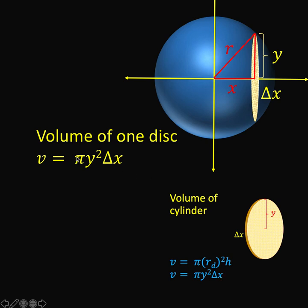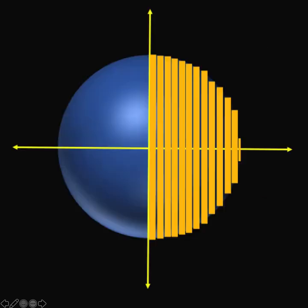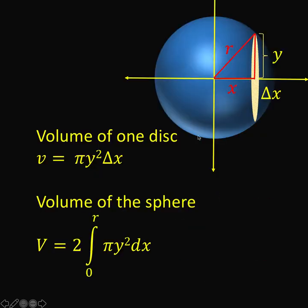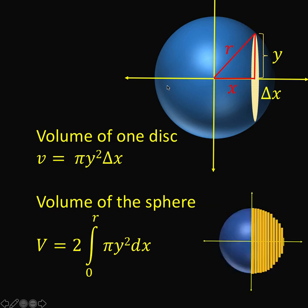So knowing that the volume of the disk is pi y squared delta x, then, to find out the volume of this entire sphere, what we need to do is slice this sphere into infinite number of disks like this, and sum up all the volume of those thin disks. And that idea of summing up all these volumes of this thin disk is now computed using calculus technique, which we call as integration.